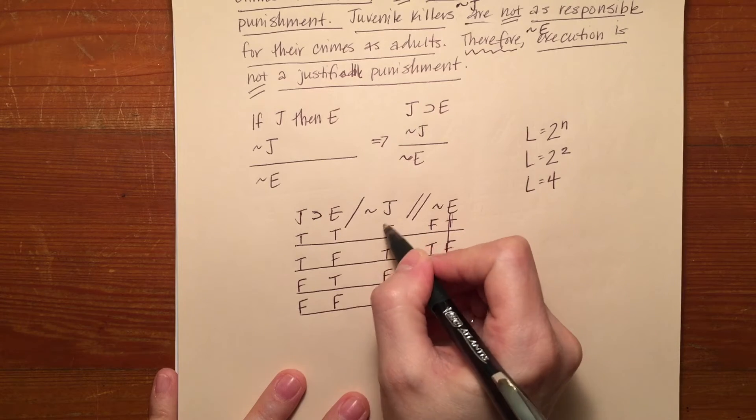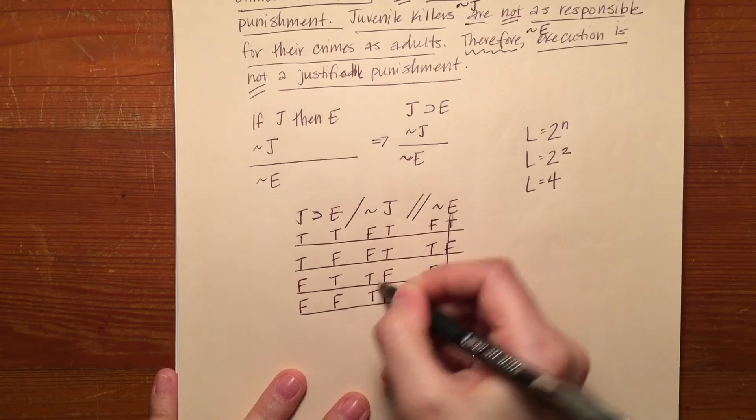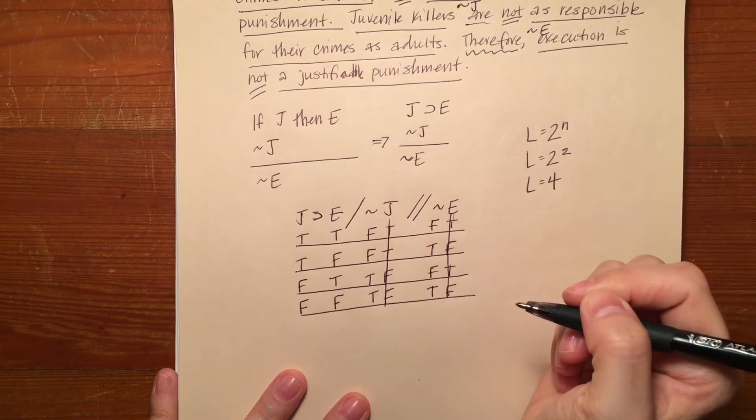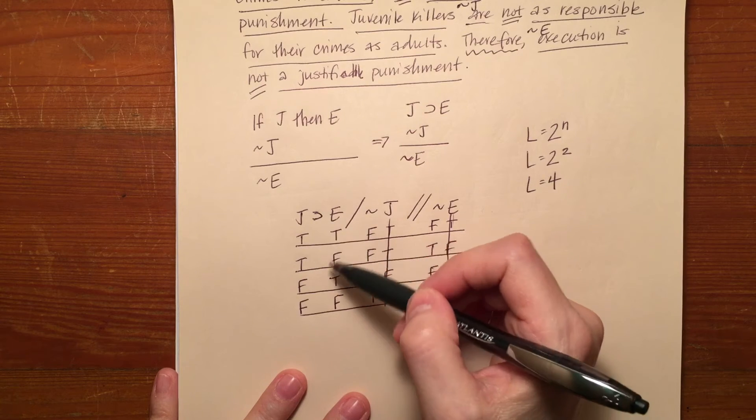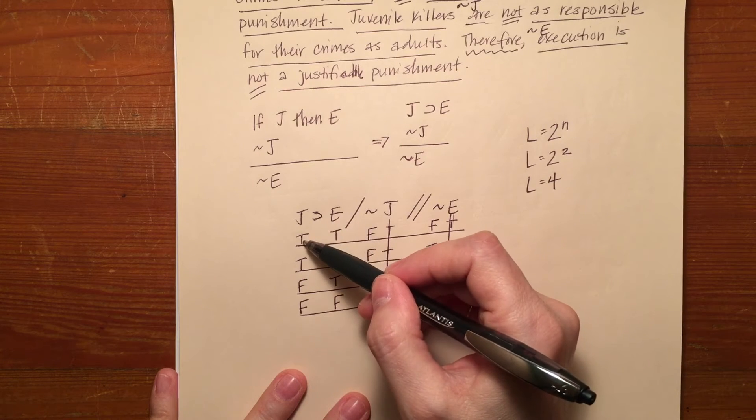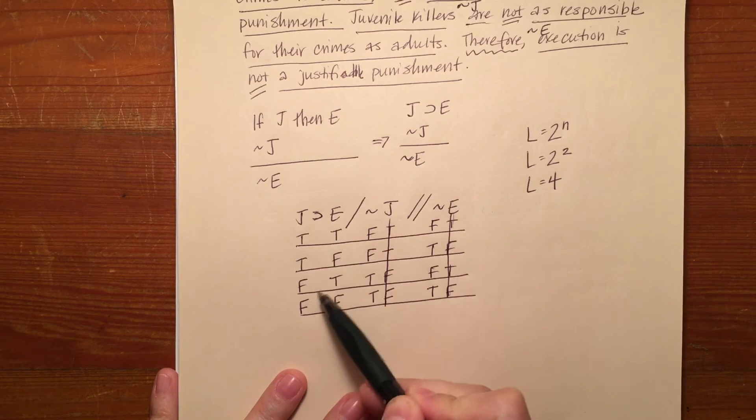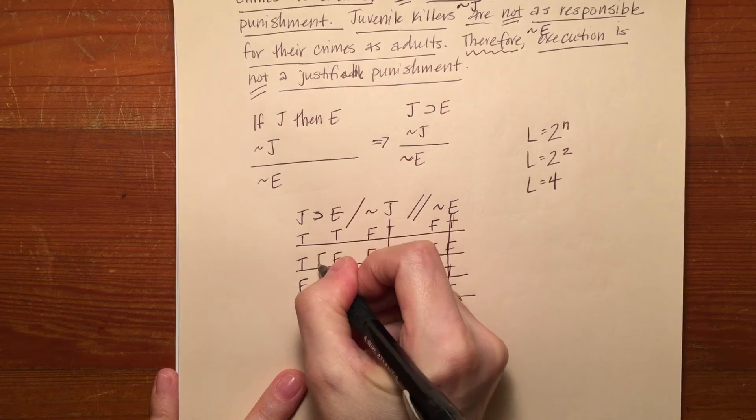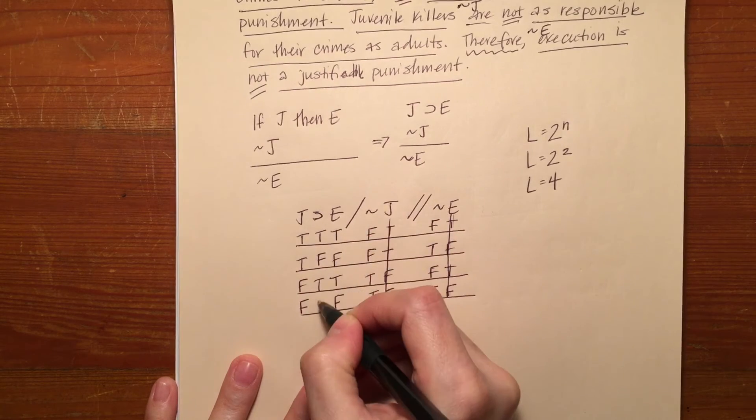Here I'll remember that my rule for the horseshoe is that it's only false if it's true then false or true on the left and false on the right. There's only one occurrence of that here. It's here, true, false. Here it will be true, true, true.